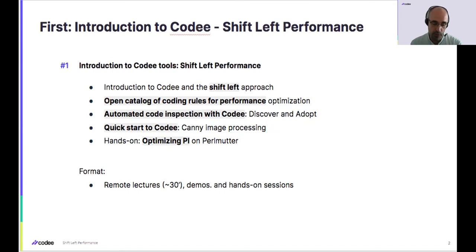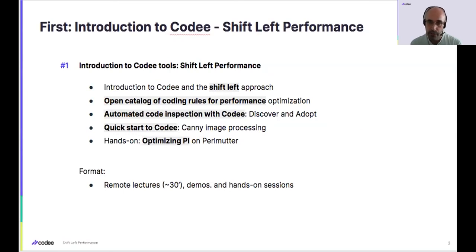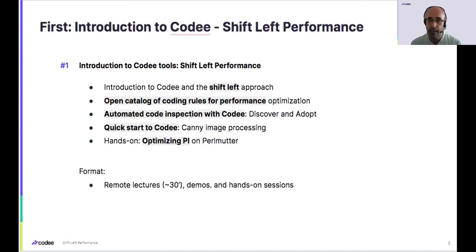Shift left performance cannot be done with software only. It needs to be done with the collection and curation of coding best practices for performance, and producing support documentation that the tool can refer to and that the user can inspect and read to understand the performance issues, what the solution is, and how to actually fix it. In this first part, we will cover shift left performance with the help of the Kodi software installed on NERSC.